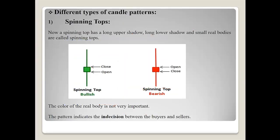Now we are going to see different types of candle patterns. The first one is called a spinning top. A spinning top has a longer upper shadow, a longer lower shadow, and a small real body. For example, let's say the market opened at 50 rupees, came all the way down to 30, went all the way up to 70, but at the end of the time frame the market closed at 55.